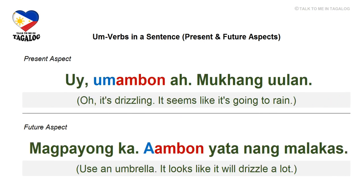Present aspect: Uy, umaambon na, mukhang uulan — 'Oh, it's drizzling; it seems like it's going to rain.' Uy means oh, umaambon is drizzling, mukhang means it seems, and uulan is going to rain. Future aspect: Magpayong ka, aambon yata ng malakas — 'Use an umbrella; it looks like it will drizzle a lot.'